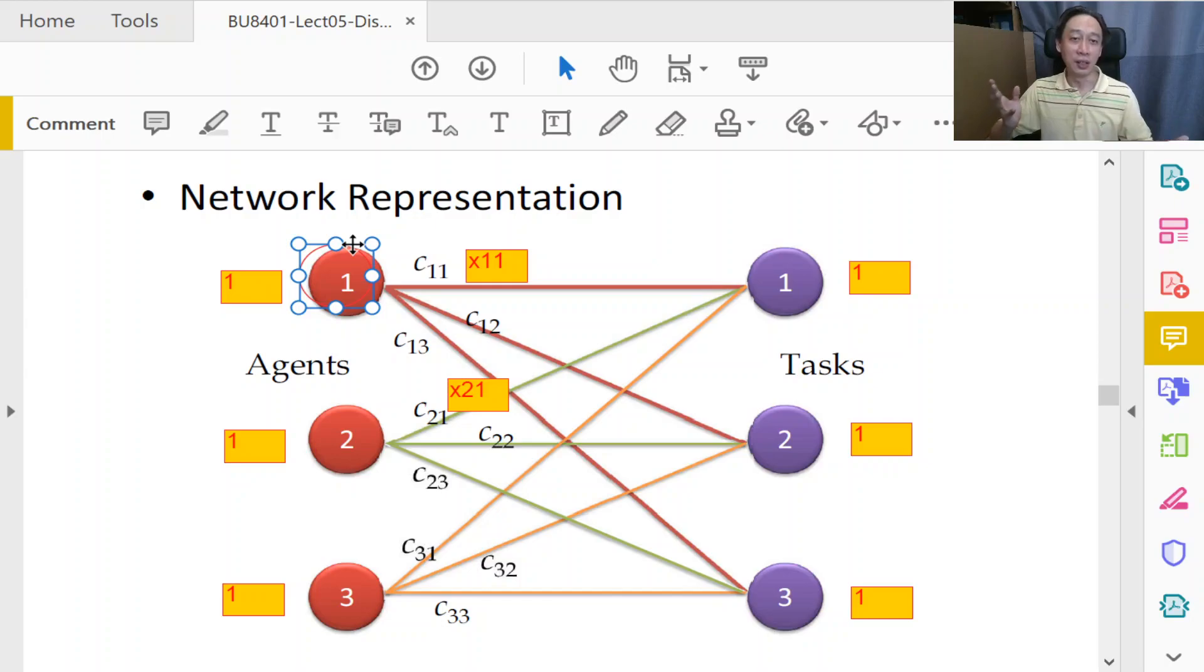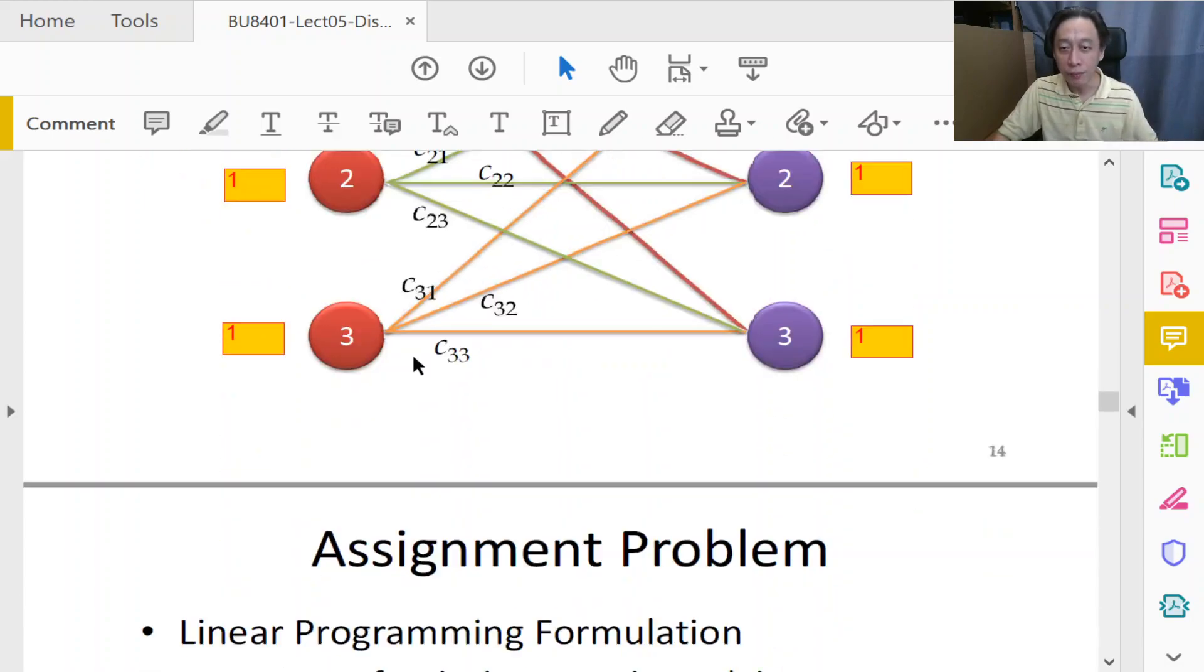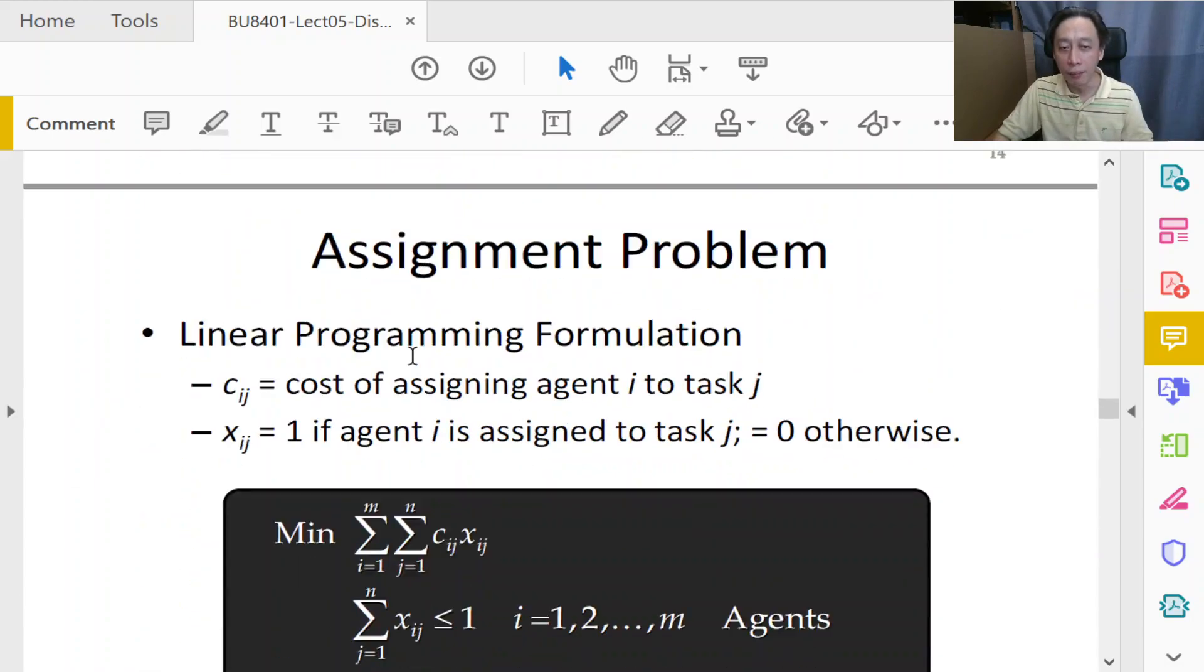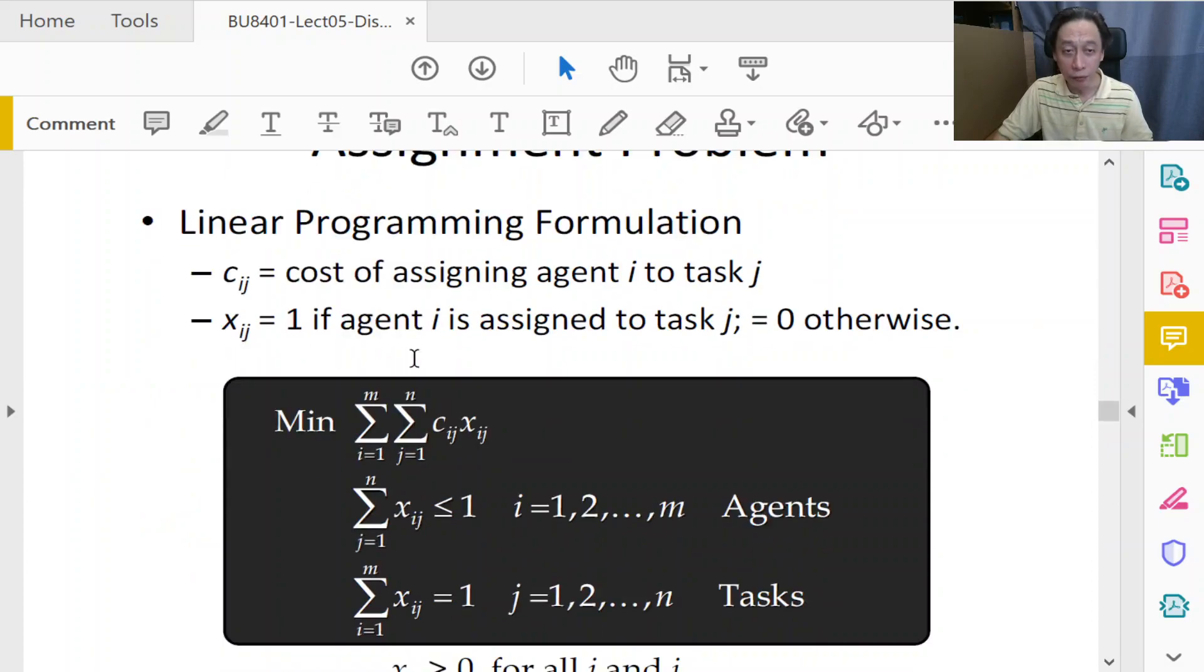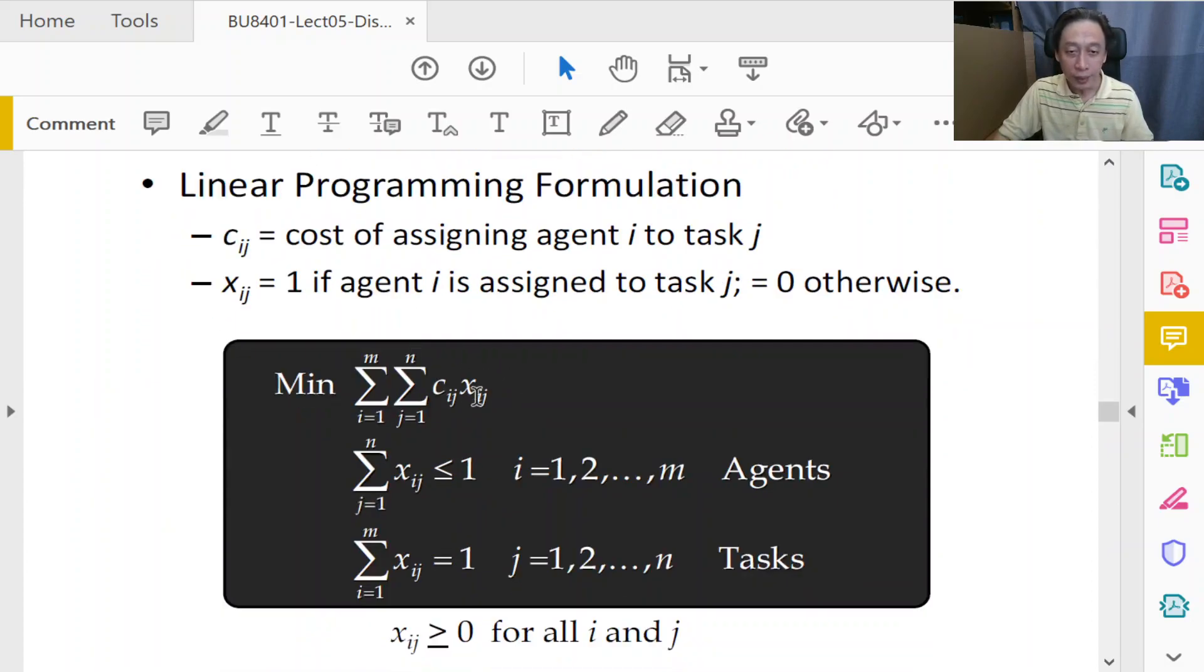In rephrasing, we find that it is not inconceivable to phrase the assignment problem via a transportation problem. This is well supported by the network representation because both representations look exactly the same. Therefore, we can skip the step-by-step development of this assignment issue and immediately copy and paste the template from transportation, only to amend it a little bit.